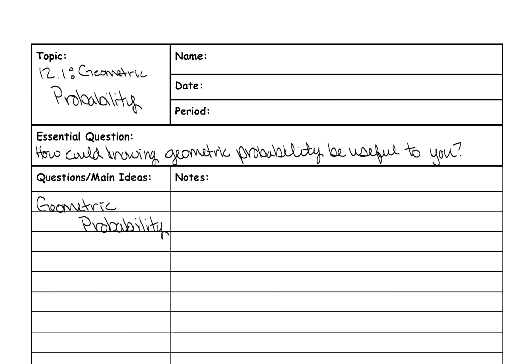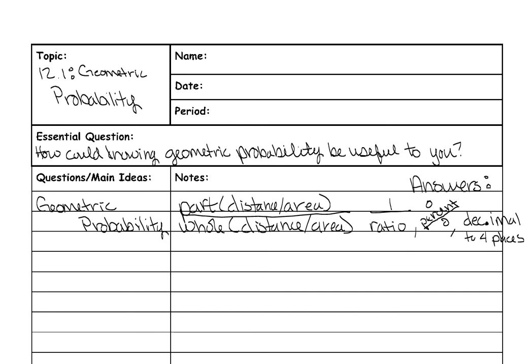This is another example of when we use part over whole, and the ratio you get from putting the part of the problem, part of the area or distance, over the whole area or distance. That will give you the ratios that you would need to find your probability. And whenever we do geometric probability, we write our answers three different ways. You always have to know all three ways just so that you know what each of those are saying. So as you can see, the answers would be shown as a ratio, a percent, and a decimal, and that decimal needs to have four decimal places.